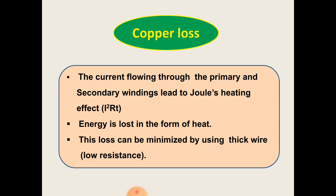First, copper losses. The current flowing through the primary and secondary windings leads to Joule's heating effect, causing heating. Such losses are called copper losses, and this loss can be minimized by using thick wire which has low resistance.